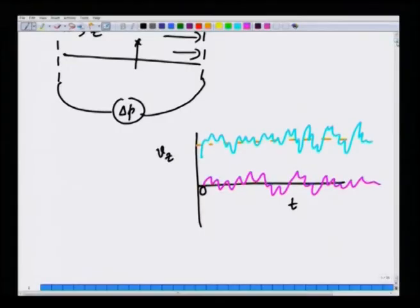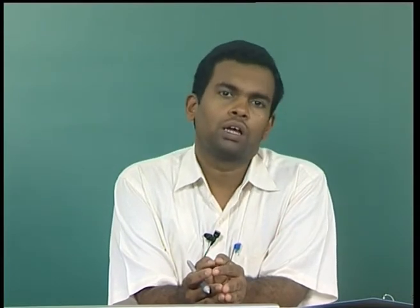From an engineering perspective, we restrict ourselves to predicting mean quantities such as time-averaged velocities, since what we want are average quantities like friction factor, volumetric flow rate, or pressure drop. However, as we saw in the last lecture, fluctuations play an indirect role even in determining the mean, because when we substitute the decomposition of total velocity into mean plus fluctuations into the Navier-Stokes equations, certain nonlinear terms involving fluctuations do not vanish.